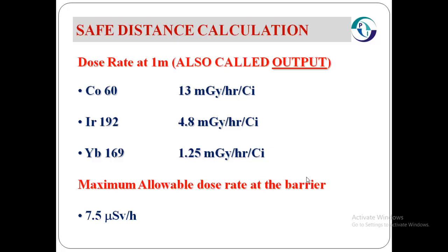We must know about the dose rate at one meter per Curie, which is also called the output of the radiation source. For Cobalt-60, it is 13 milligray per hour per Curie. For Iridium-192, it is 4.8 milligray per hour per Curie. And for Ytterbium-169, it is 1.25 milligray per hour per Curie.